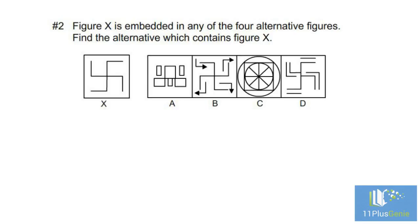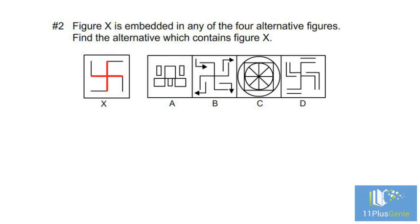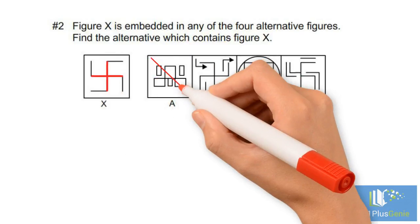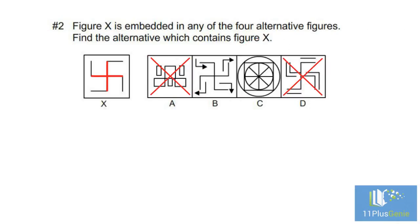Find the alternative which contains figure X. A feature we can use in the question figure is this large plus sign. We can eliminate A and D because neither of them contain this large plus sign.